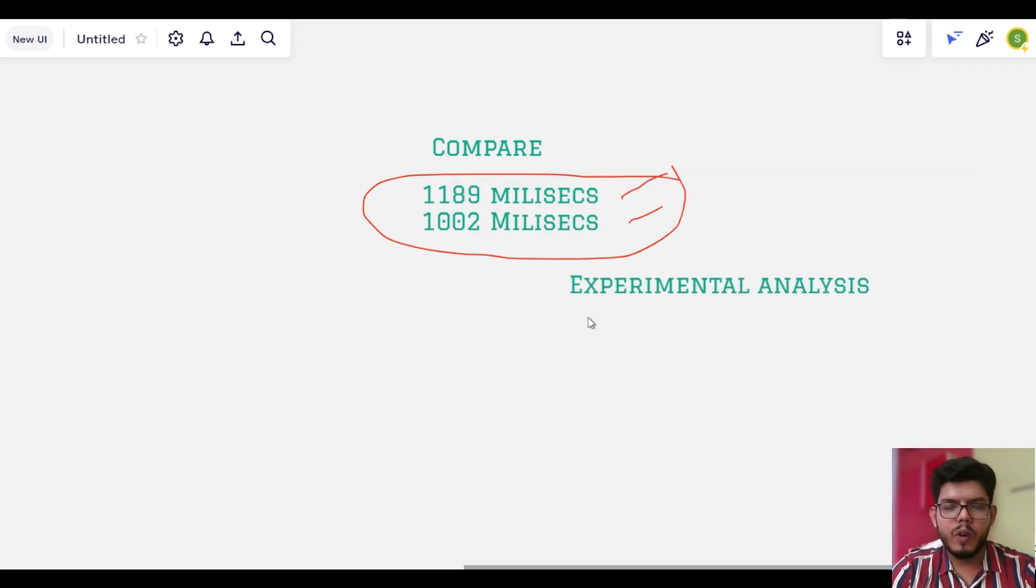I will actually show you one example of experimental analysis. But it is not preferred because first you need to write the code, then execute it, then know the actual time taken for the code to run, then actually plot a graph and then see which algorithm is better. So instead of an experimental analysis, we are going to analyze it theoretically.